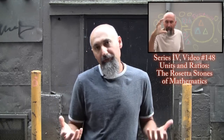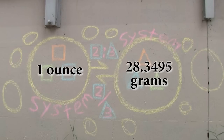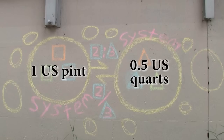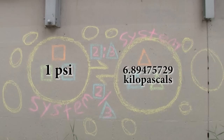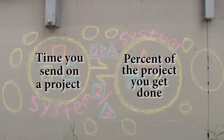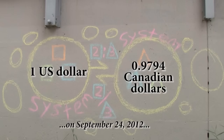In the last video we asked ourselves: what happens when you want to convert from one system to another, from one unit to another? What happens when you want to do unit conversion, irrelevant of what the units are — may they be days to seconds, kilometers to miles, feet to meters, Celsius to Fahrenheit, ounces to grams, calories to joules, gallons to liters, pints to quarts, pounds per square inch to kilopascals, the amount of time you work, how much you get paid, the time spent on a project, or percent of the project you get done.